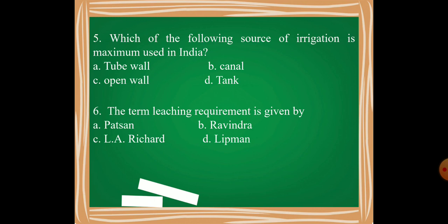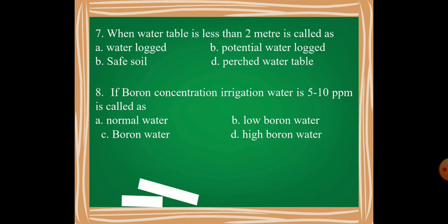Moving on, your seventh question is: When water table is less than 2 meters, is called as waterlogged, potentially waterlogged, safe soil, or perched water table?